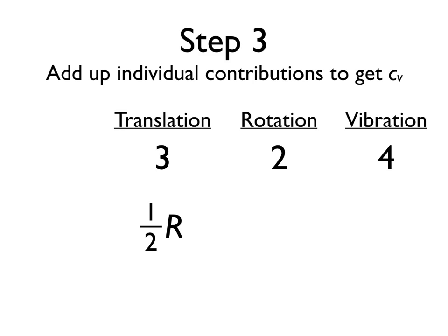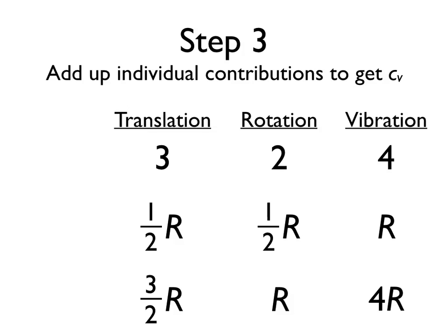Each translation contributes one-half R to our heat capacity, where R is the ideal gas constant in units of joules per mole·Kelvin. So three translational degrees of freedom give us three-halves R. Rotations also contribute one-half R each, giving us two-halves R, or simply R. Vibrations are different — they can store one full R of energy, because unlike translations and rotations which only store kinetic energy, vibrations also store potential energy, giving half R for kinetic and half R for potential. With 4 vibrational degrees of freedom, that gives us 4R. Adding everything up: three-halves R plus R plus 4R gives us thirteen-halves R, our constant volume heat capacity Cv.